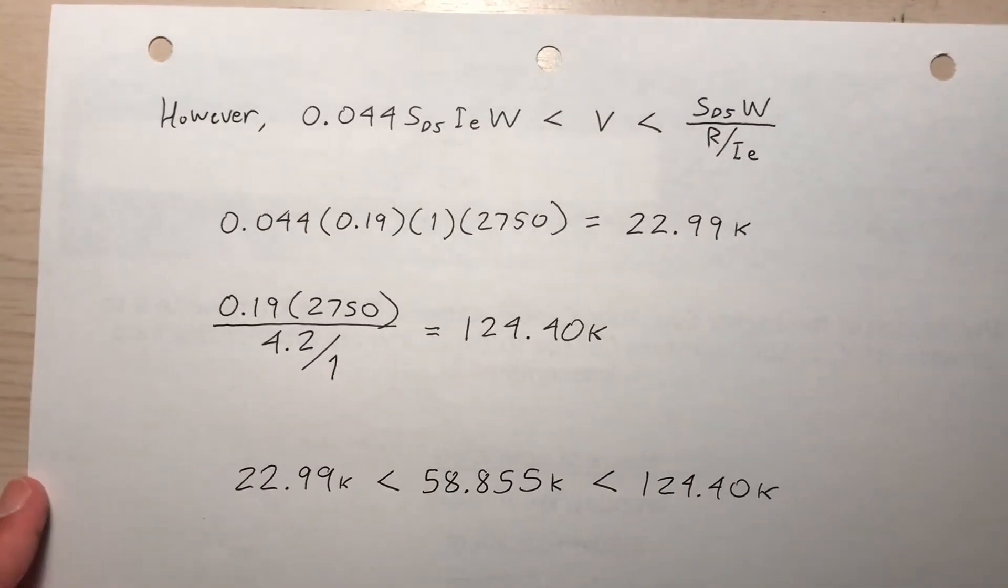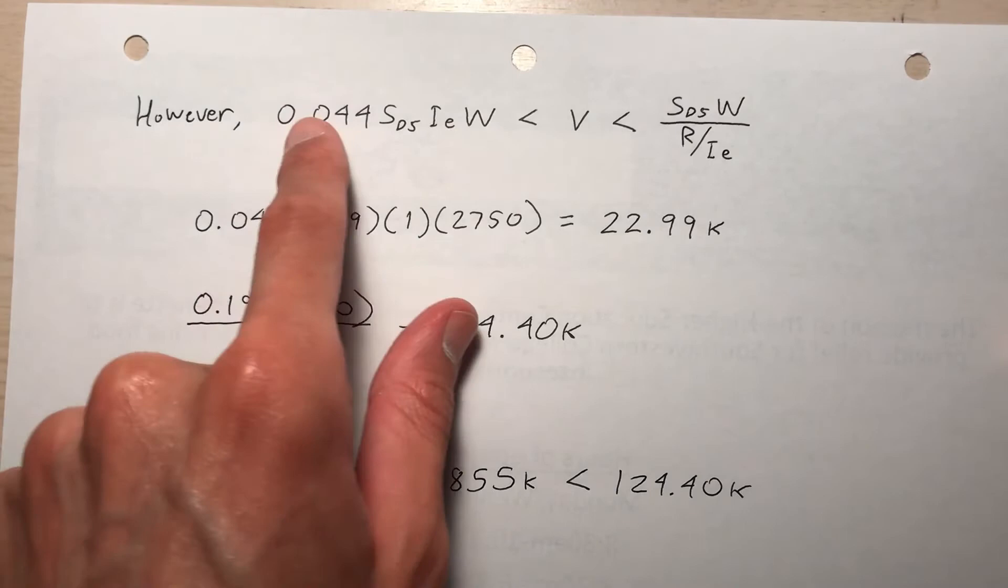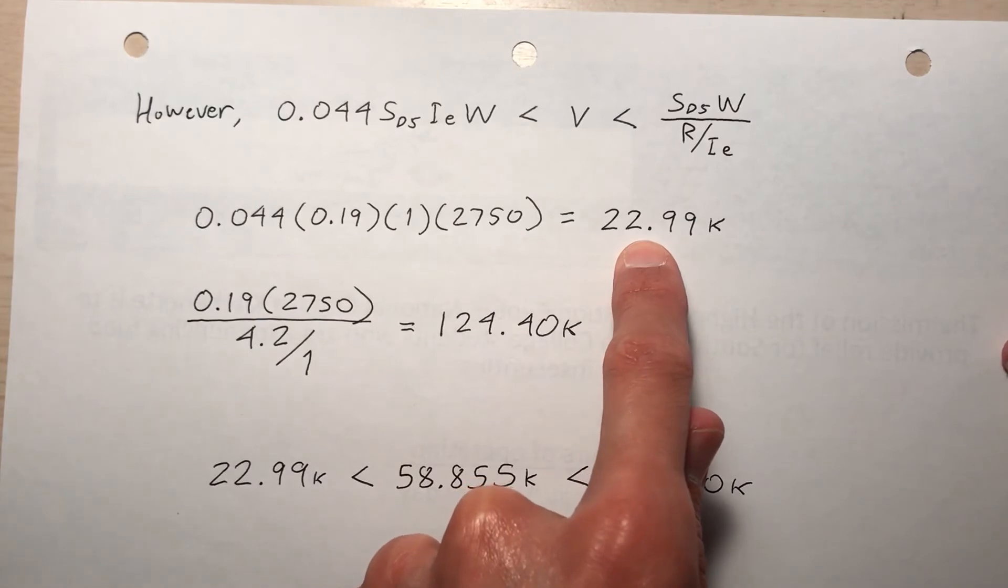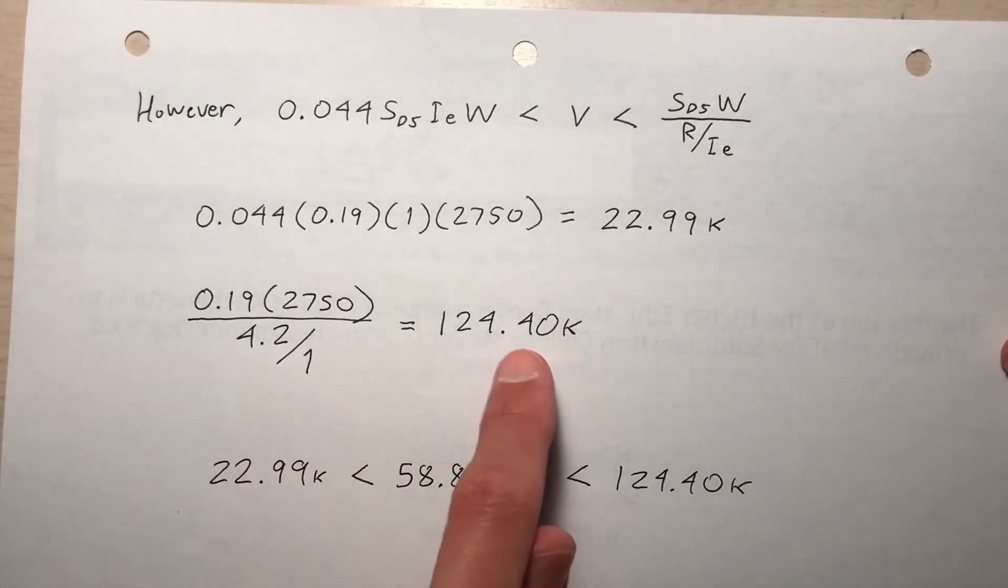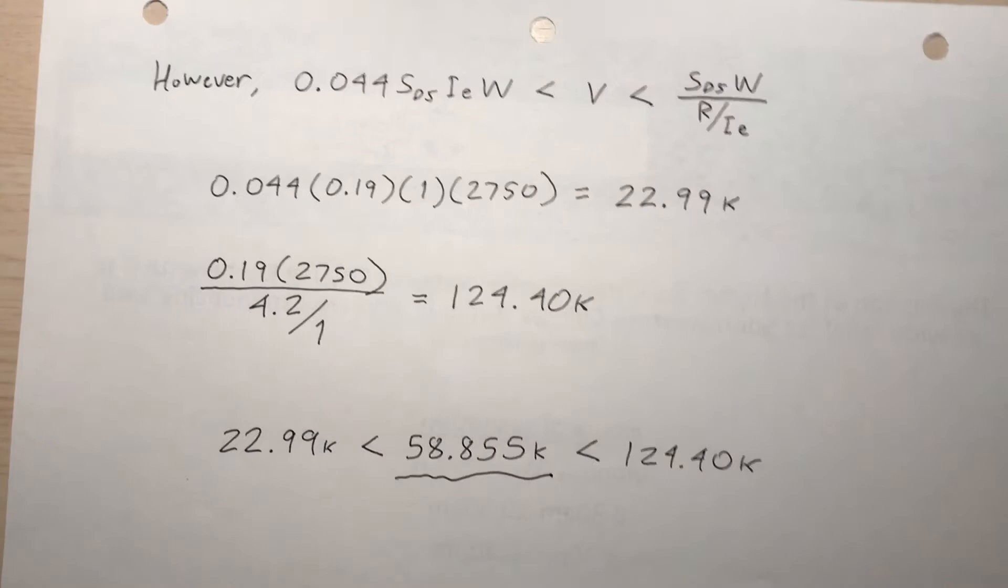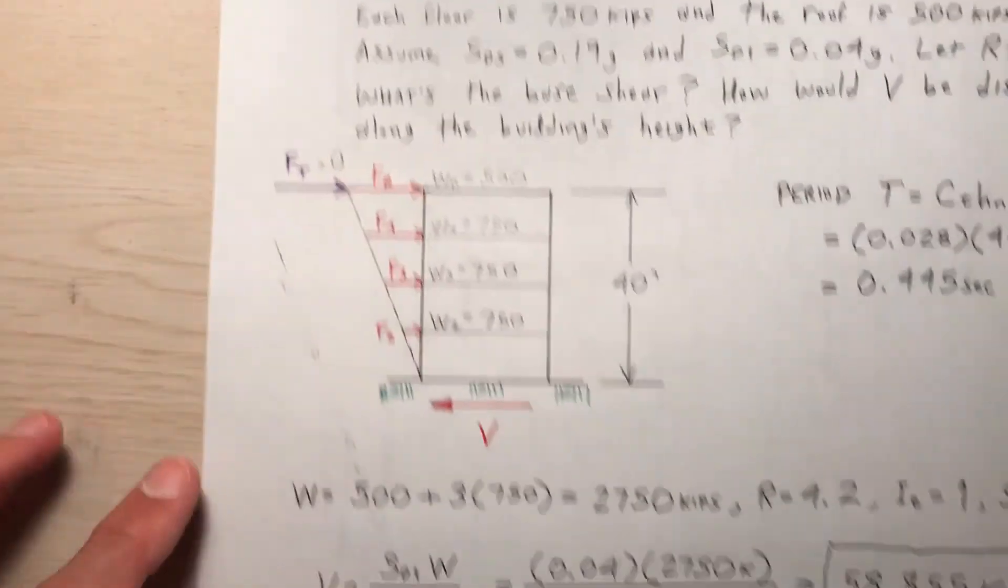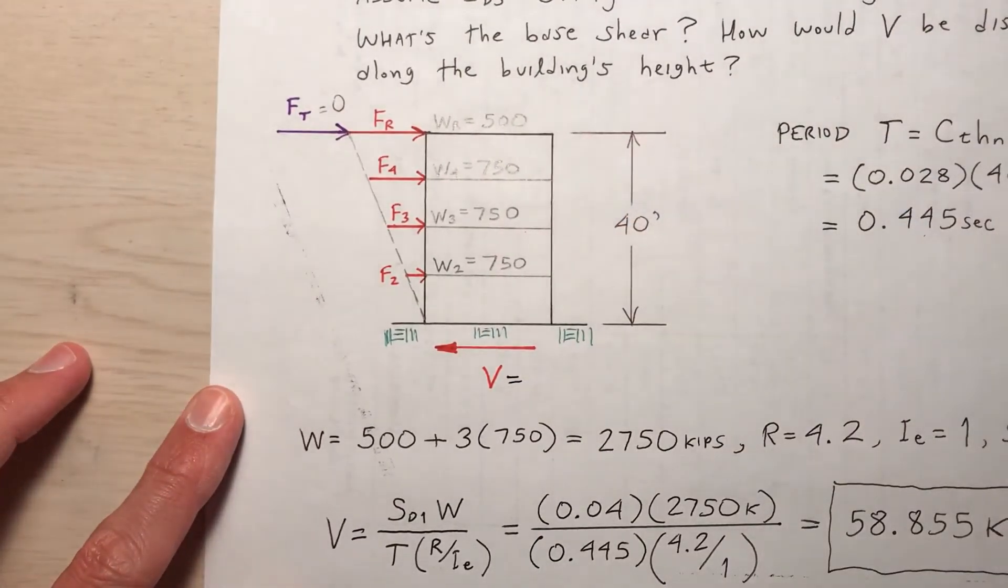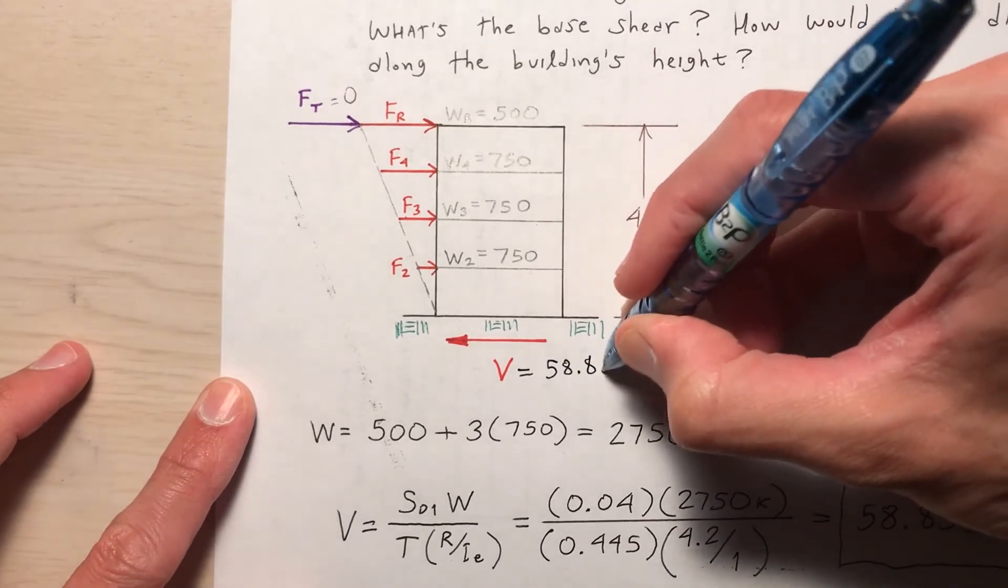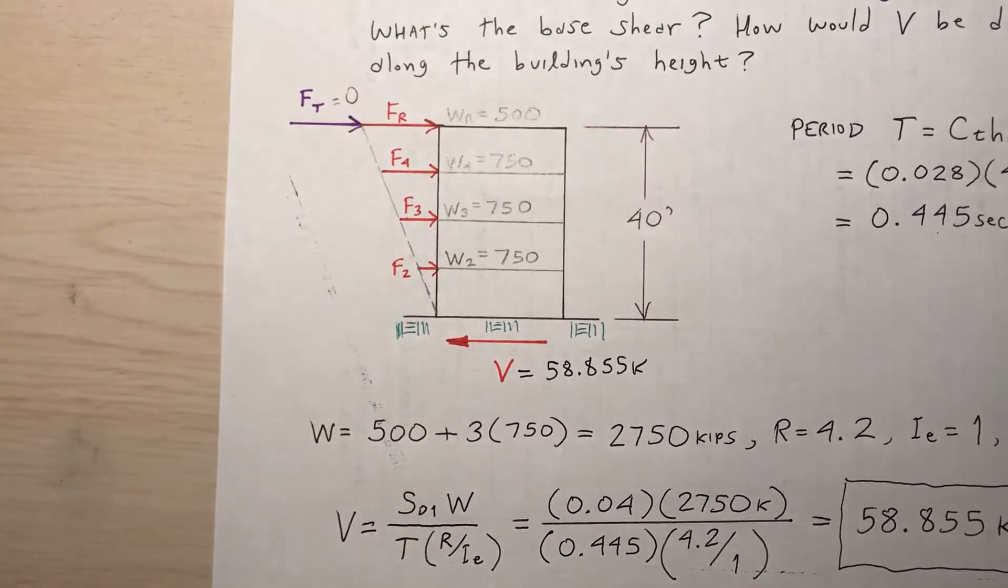Before I take that for granted, let me bring back these stipulations that I had. Remember this inequality from earlier. V has to be between these two values. So this value, I have all the coefficients I need. I calculate that here, about 23 kips. Now, what about the right side of this inequality? I calculate that here, 124.4 kips. And I see that my base shear 58.855 is in fact between those two limiting values. So going back to the previous slide, I will write here 58.855 kips.